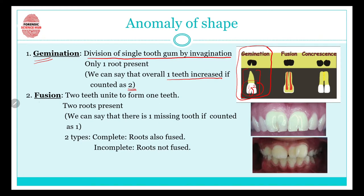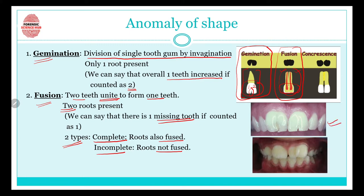In fusion, two teeth unite to form one tooth. We have two separate teeth that have united with each other, so there are two roots. We can say that there is one missing tooth, because two teeth have united and now it looks like just one piece. There can be complete fusion, where roots are also fused, and incomplete fusion, where only the crown portion is fused.